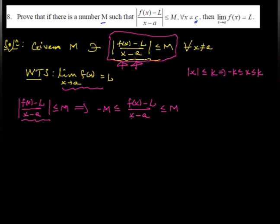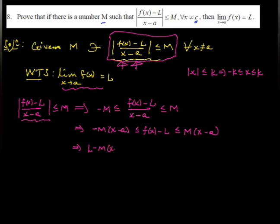From this inequality, multiplying each part by (x − A), we get: −M(x − A) ≤ F(x) − L ≤ M(x − A). Then adding L on each side: L − M(x − A) ≤ F(x) ≤ L + M(x − A).